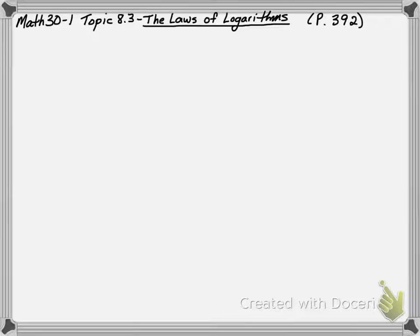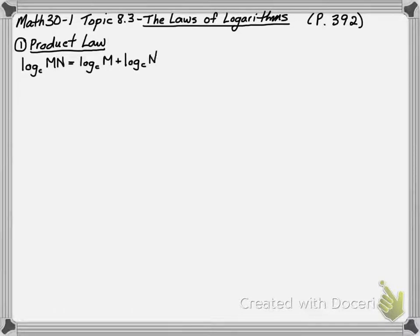In Math 30-1 today, we're going to look at topic 8.3, the laws of logarithms, from page 392. Our first law is called the product law. This says any log of m times n is the log of m plus the log of n. Remember that logs are exponents, which allows us to do this.